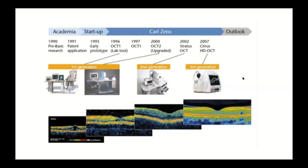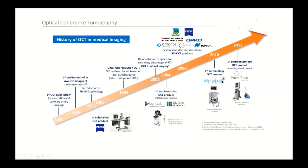The OCT technology timeline shows that early OCT scans had quite crude images, but as time progressed, imaging resolution improved significantly and the size of the machines got smaller. From 2002 onwards there was an explosion in OCT technology, with spin-offs into sub-specialties like dermatology and gastroenterology.